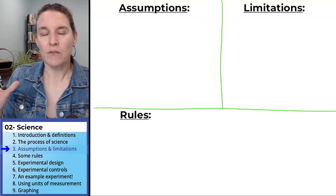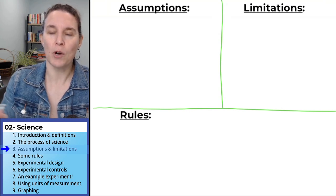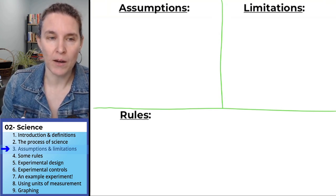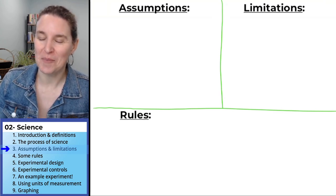So our list of assumptions and limitations are going to inform our list of rules that we're going to talk about in the next section. But let's look first at these assumptions that we have.